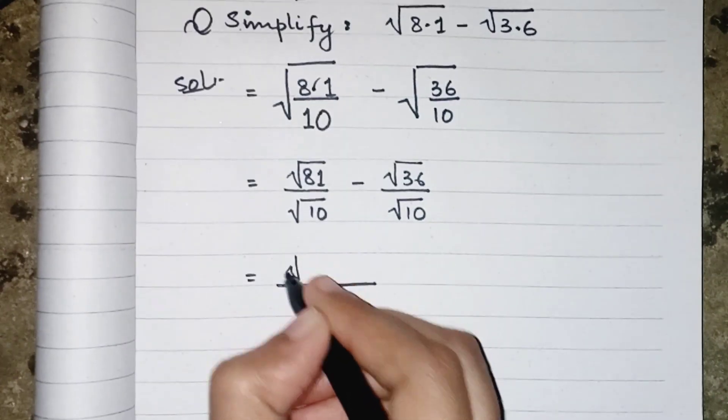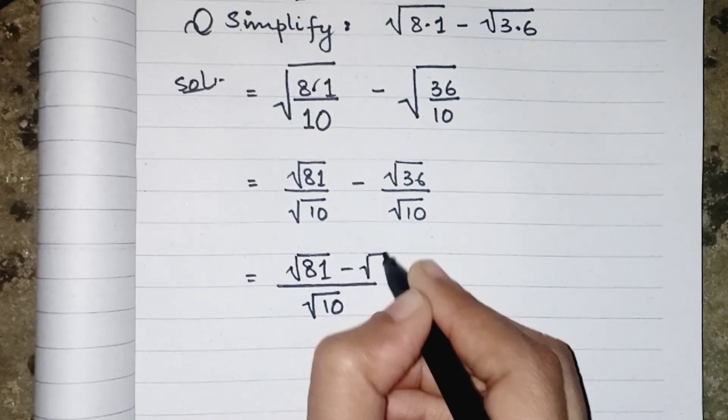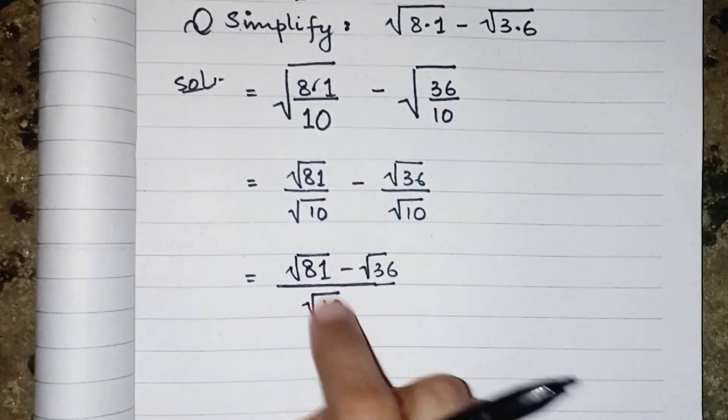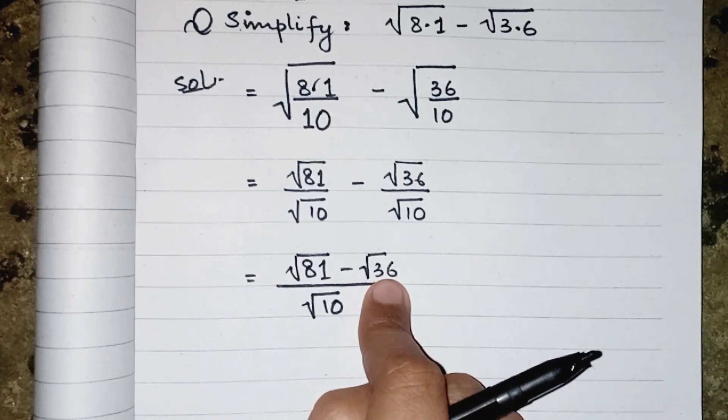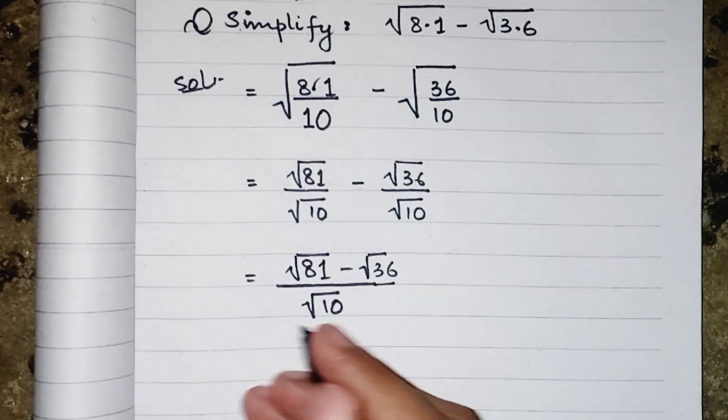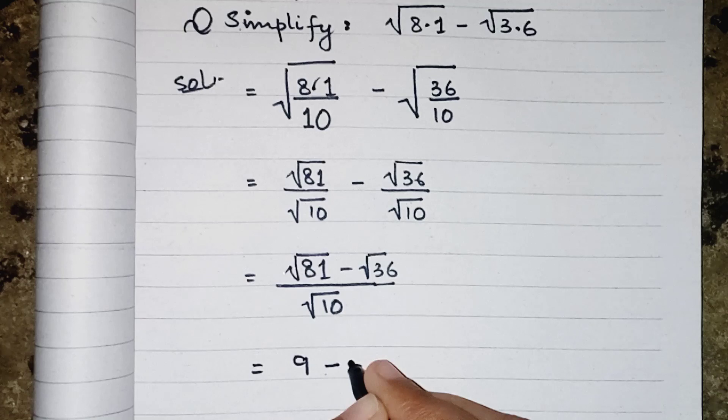Now we have to subtract under root 81 minus under root 36. We cannot subtract them, but these are now perfect square numbers, so we can replace them. 81 is a perfect square of 9 and 36 is the perfect square of 6 upon under root 10.